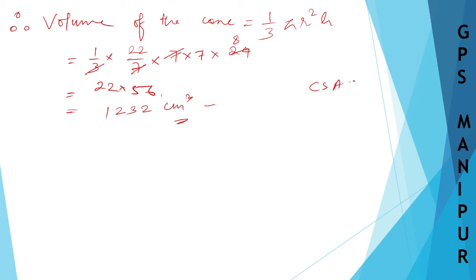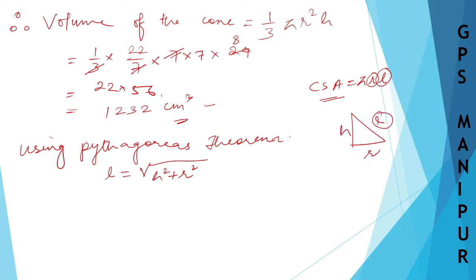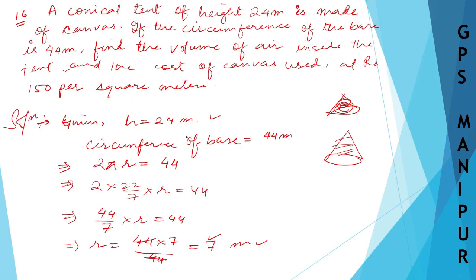The formula for curved surface area is π × r × l. We know r, but we don't know l, the slant height. Using the Pythagorean theorem, l = √(h² + r²). So l = √(24² + 7²).